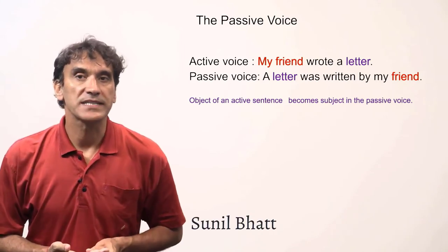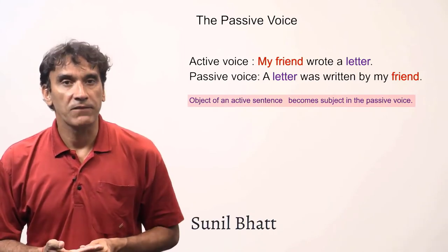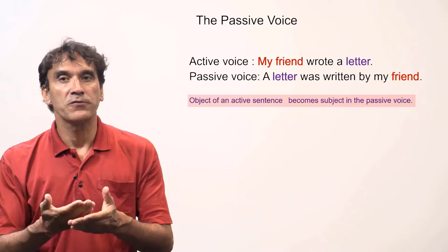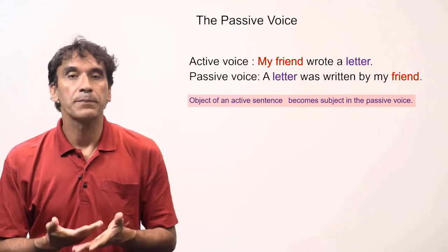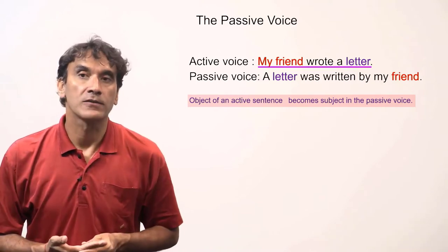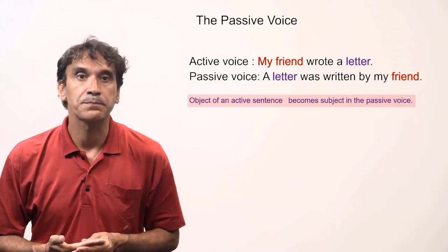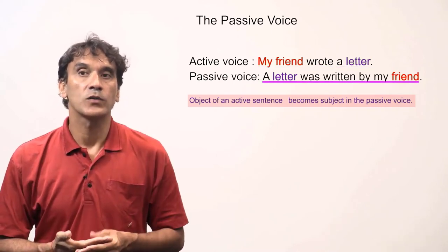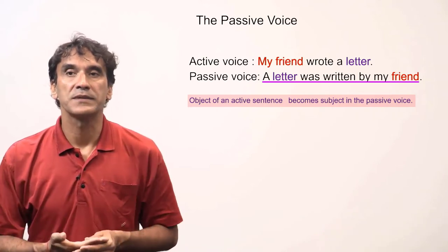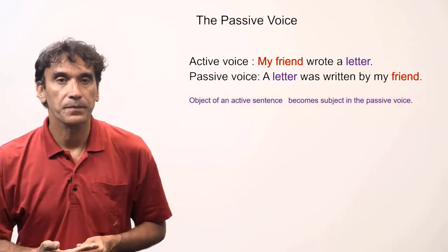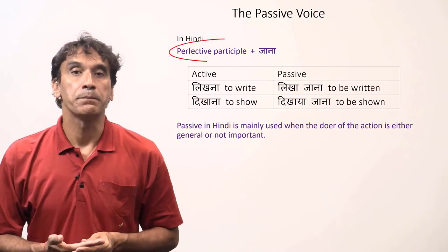The next grammar point is the passive voice. The passive voice is a sentence in which the object of an active sentence becomes the subject. For example, 'My friend wrote a letter' is active voice, and its passive equivalent is 'A letter was written by my friend.' Here, the letter became the subject in the passive sentence.